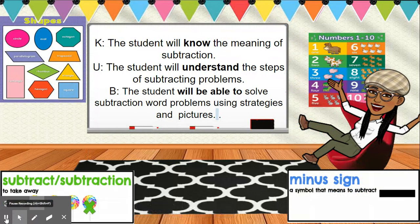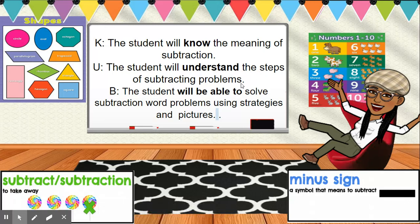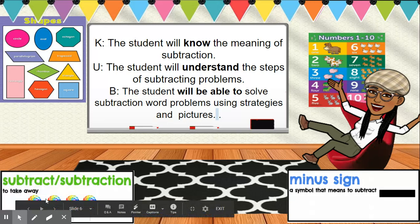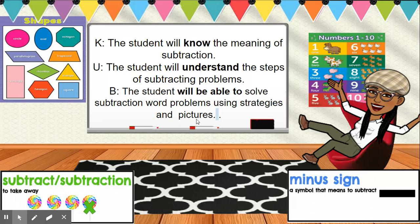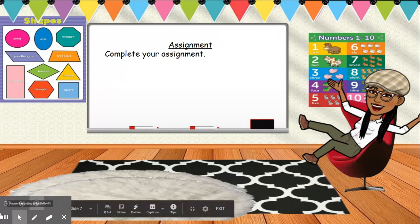Now that I've shown you how to solve subtraction word problems using pictures, let's review what we've learned. The students will know the meaning of subtraction, which means to take away. The students will understand the steps: count how many were there first, then see how many were taken away and how many are left. The students will be able to solve subtraction word problems using strategies and pictures — count, label, and take away those numbers that are removed. Now go ahead and practice the assignment. Good luck. Do your best.